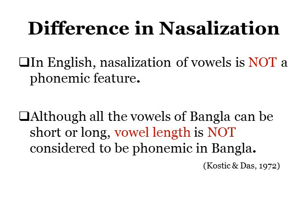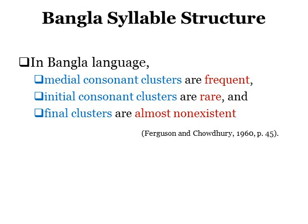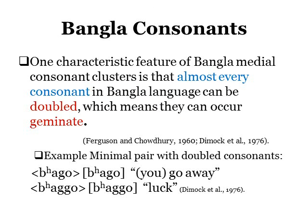On the other hand, in English, nasalization of vowels is not a phonemic feature. Although all the vowels of Bangla can be short or long, vowel length is not a phonemic feature in Bangla. In Bangla syllable structure, initial and final consonant clusters are rare or almost non-existent, but medial consonant clusters are frequent. One characteristic feature of Bangla medial consonant clusters is that almost every consonant can be doubled, forming a geminate. For example, 'bhaggo' means 'go away,' but if the medial consonant is replaced by its geminate form, 'bhaggo' means 'lack.'